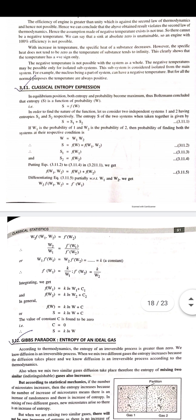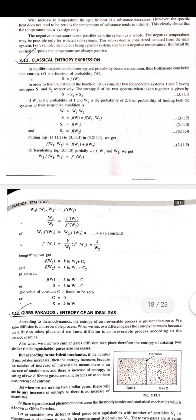In an equilibrium position, both entropy and probability have maximum values. Then Boltzmann concluded that entropy as a function of probability is S equals F of W, where S is a thermodynamic function of probability.